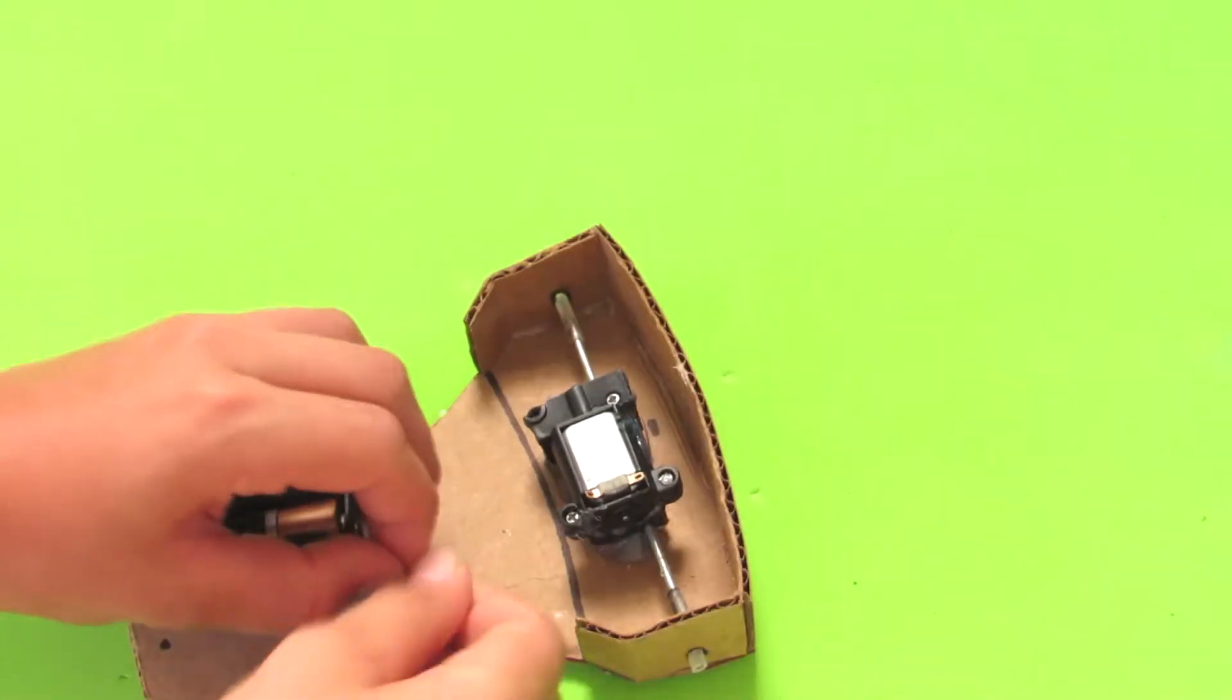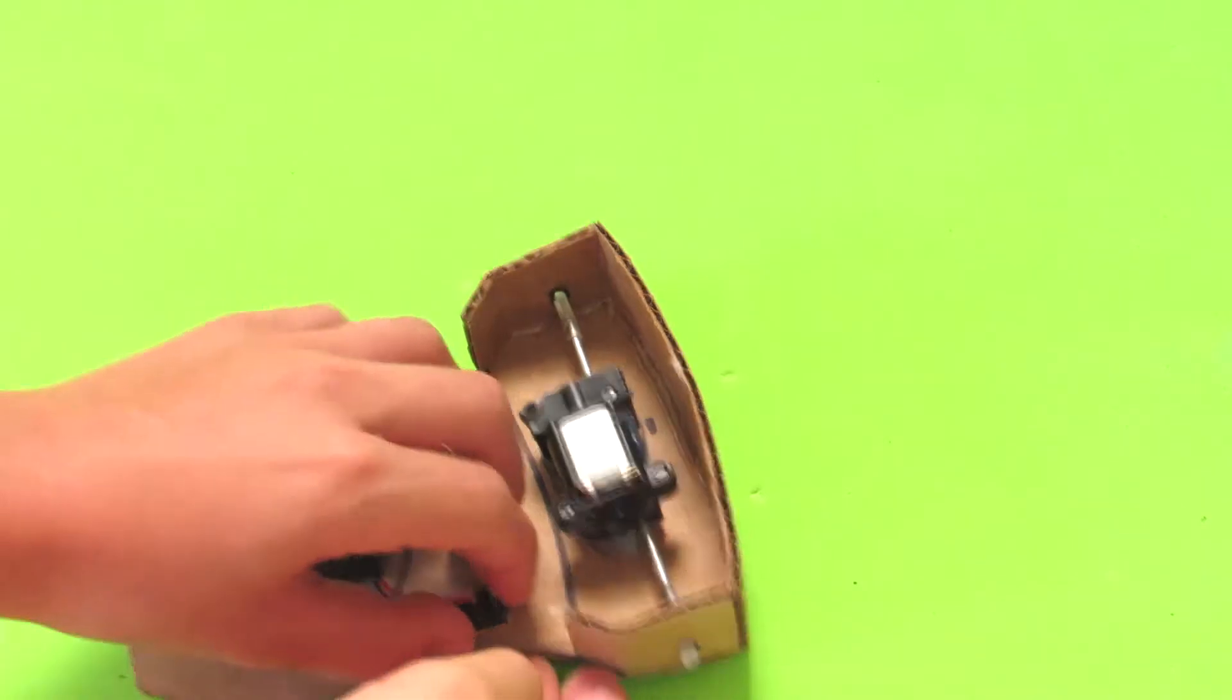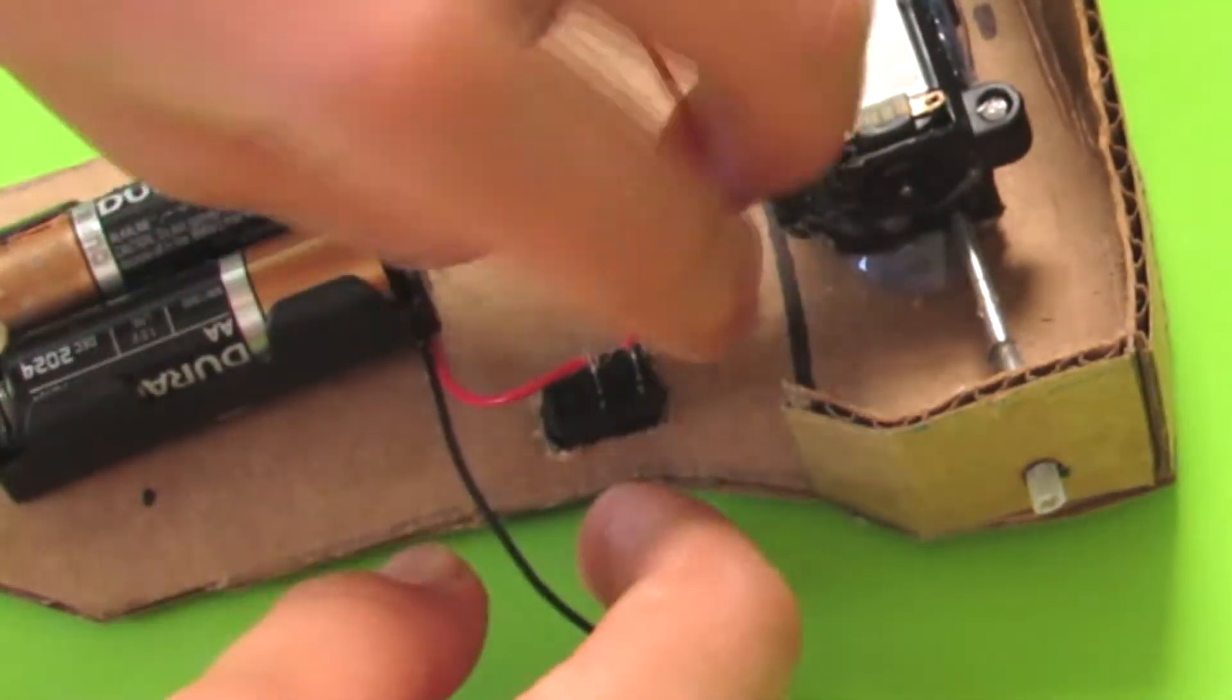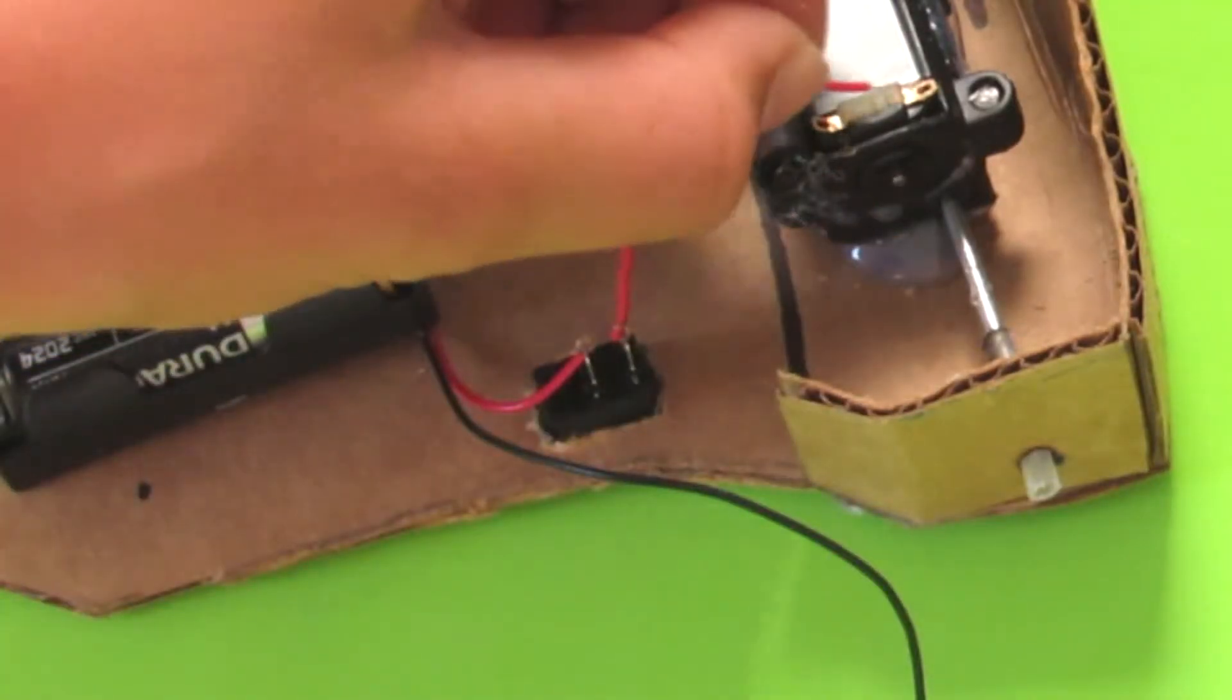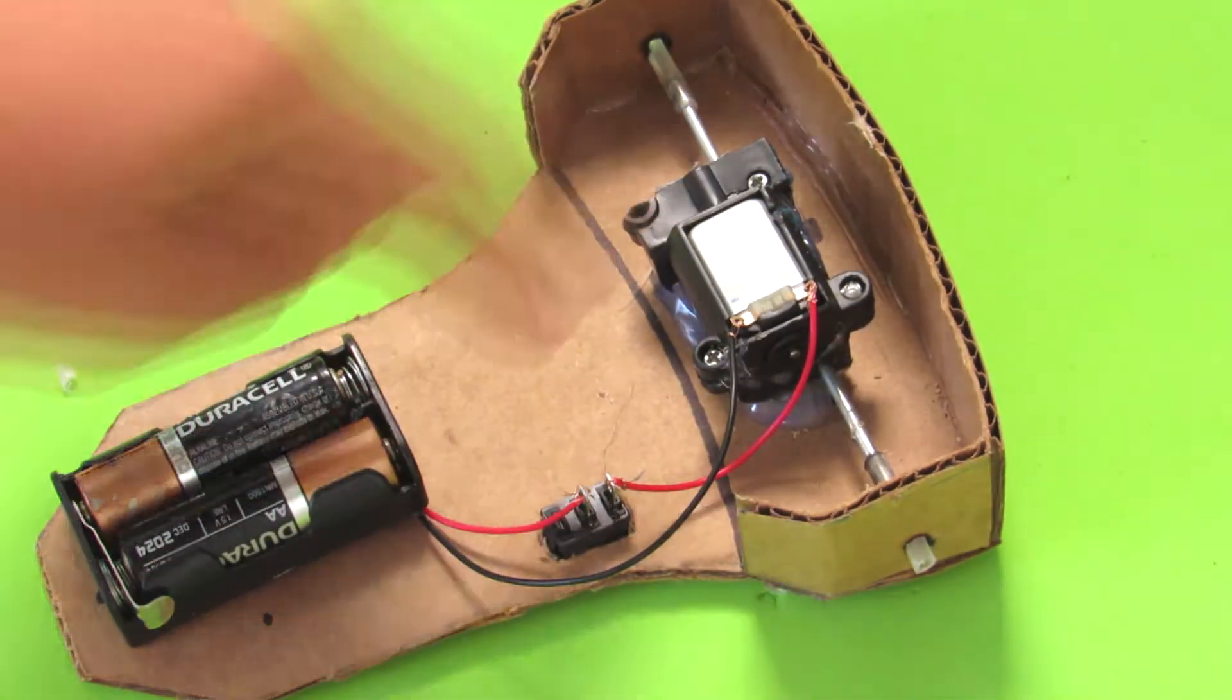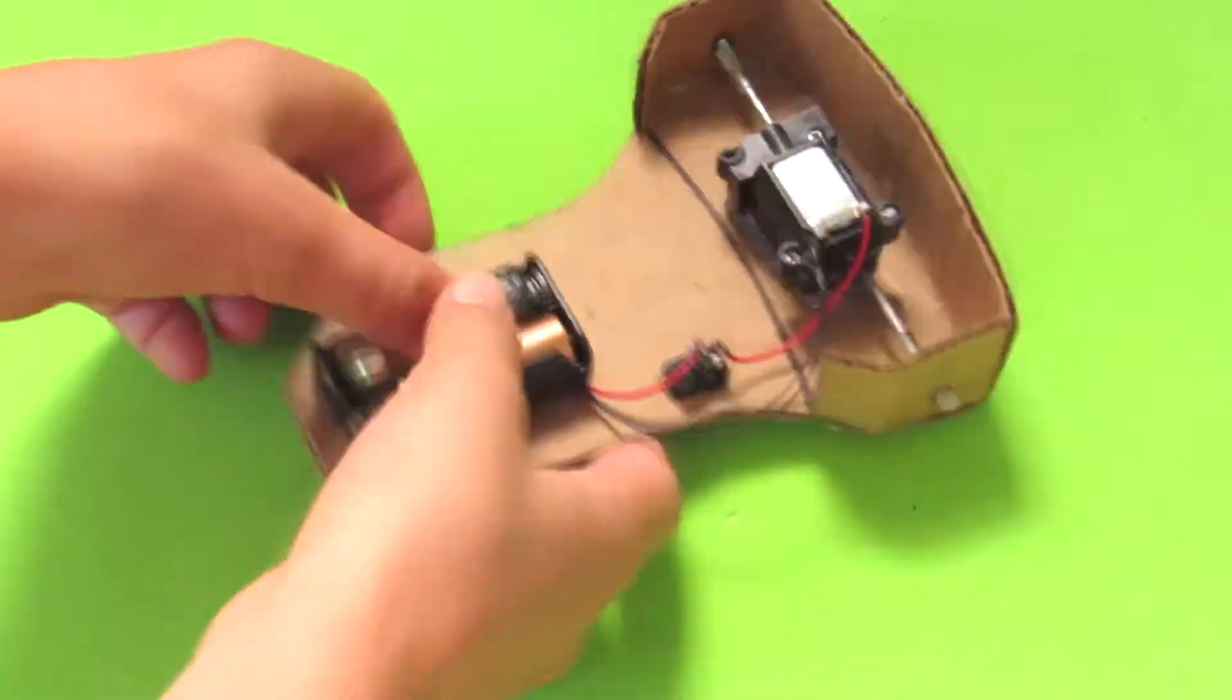Now you're going to need one of your battery packs, the two double A batteries in it, and a switch, and also some extra piece of wire. Now you're going to wire the negative end to the positive end of the switch, basically one of the ends. And you're going to wire another wire to the positive end of your DC motor. And then you're going to do the same with the black, just hook it up to the negative end of the DC motor.